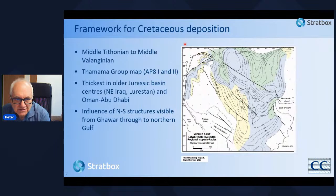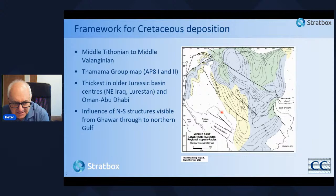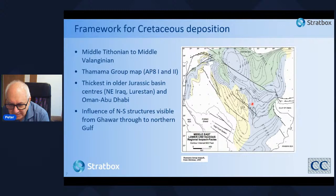The framework for Cretaceous deposition really starts in the late Jurassic, with basins of deposition and structural highs inherited from late Jurassic structures. The total isopac of the Thamama Group — AP8 sequences 1 and 2 — is thickest in older Jurassic basin centers such as northeast Iraq and Luristan and also the Oman-Abu Dhabi area. You can clearly see the influence of north-south structures: the Qatar Dome, Gawah, Burgan High and so forth, exerting influence over Cretaceous deposition.